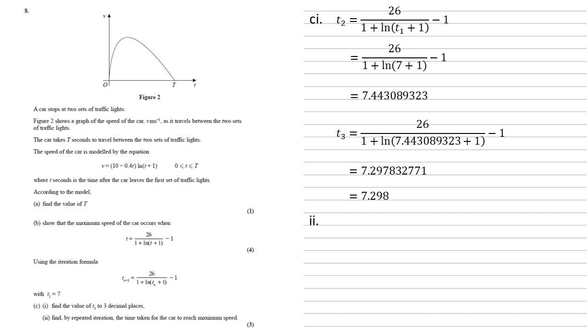And for C part two, we need to find by repeated iteration, the time taken for the car to reach maximum speed. So at this point, I would save the answer from before as an answer in the calculator. So my 7.297832771. I would then type in iteration formula, but replace TN with answer from the calculator. This way, each time you press equals, the previous answer is then going to come into your iteration formula. So you don't have to keep typing it in every time.